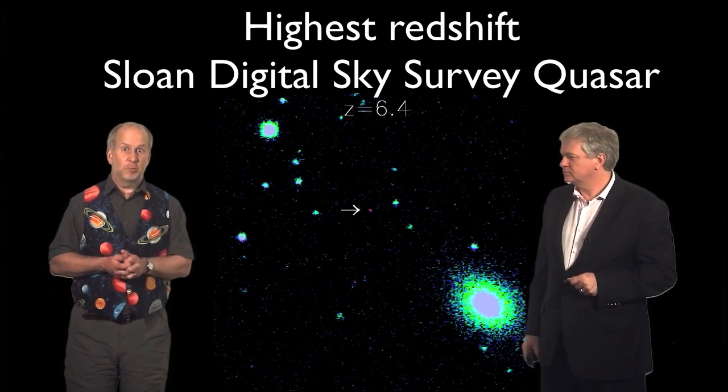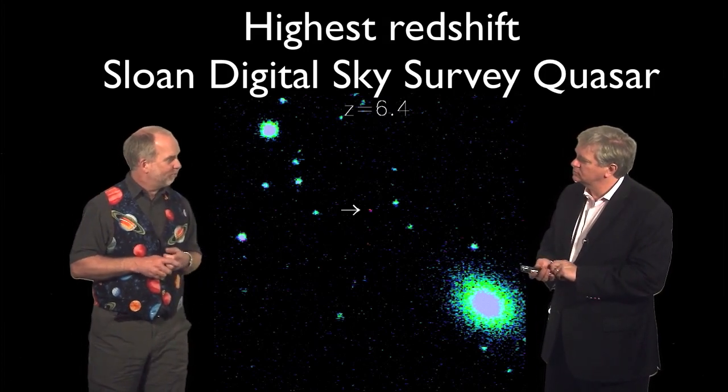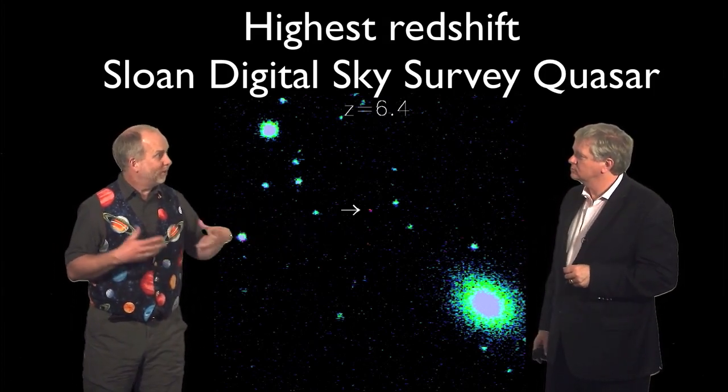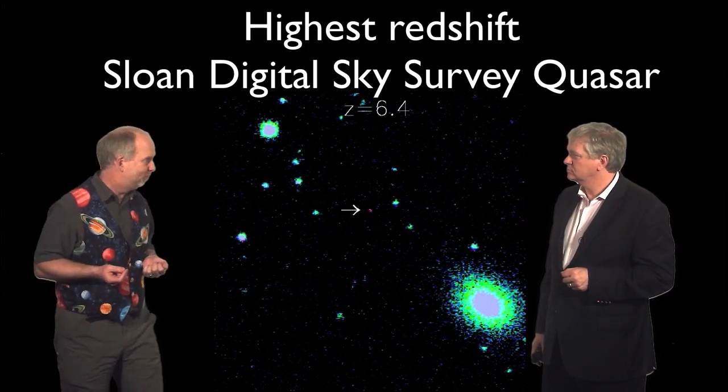This is a real needle in a haystack problem. They would look at maybe a billion stars looking for three or four things at these sort of distances. That's one in a billion problem. It's actually much worse than finding a needle in a haystack, which is only one in a million problem.